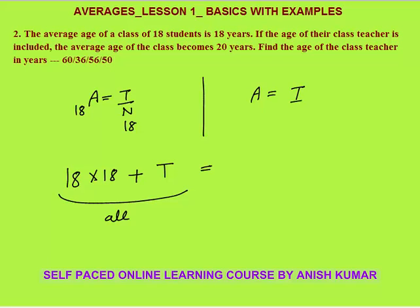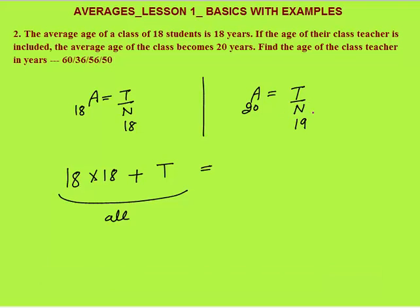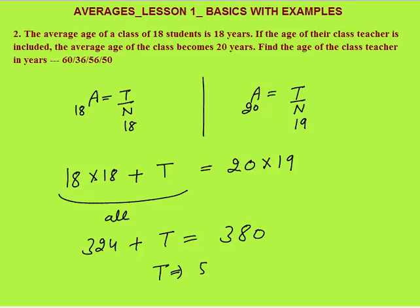With the teacher included, average is 20 years and number of persons is 19 (18 students + 1 teacher). So total age = 20 × 19 = 380. Therefore 18 × 18 + T = 380 → 324 + T = 380 → T = 56 years. This should not take more than 40 seconds to solve in an exam.